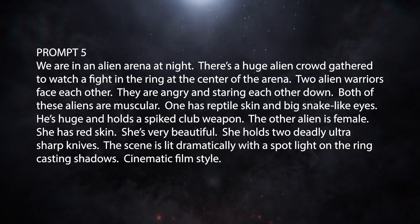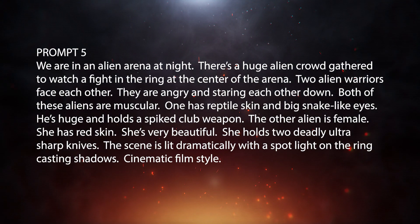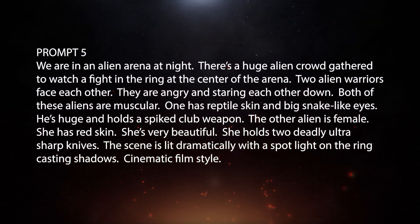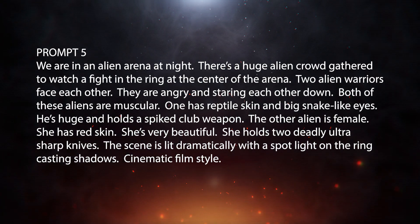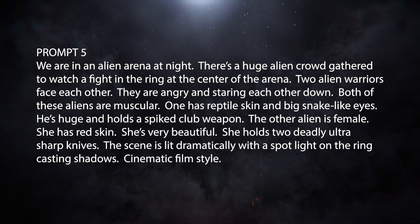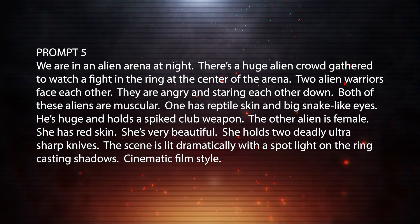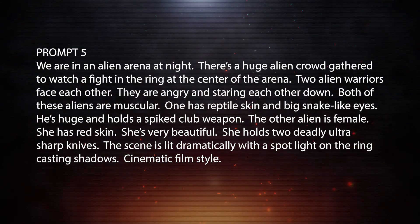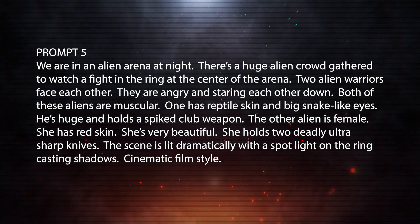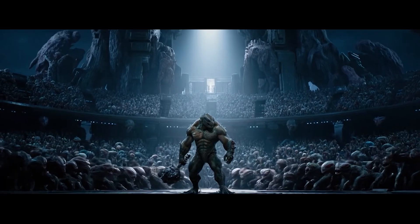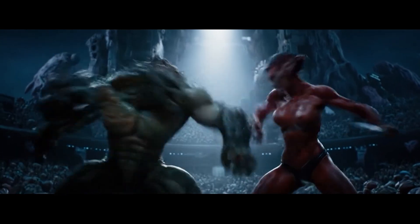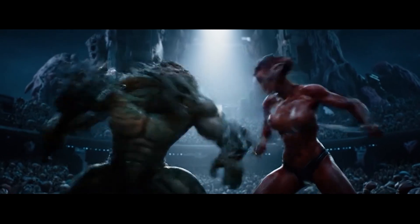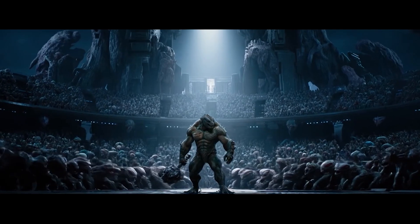Prompt 5: We are in an alien arena at night. There's a huge alien crowd gathered to watch a fight in the ring at the center of the arena. Two alien warriors face each other — they are angry and staring each other down. One is very muscular with reptile skin and big stink-like eyes, huge, holding a spiked club weapon. The other alien is female — she has red skin, is very beautiful, and holds two deadly ultra-sharp knives. The scene is lit dramatically with a spotlight on the ring casting shadows. Cinematic film style. This shot starts out a bit weird, but once it gets going I think it's really good — the spotlight in the middle of the shot is very dramatic.